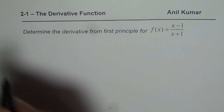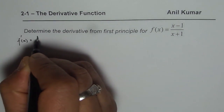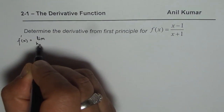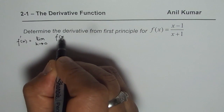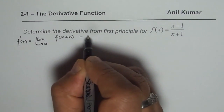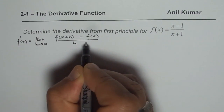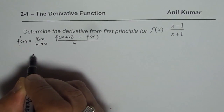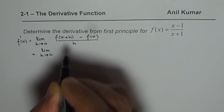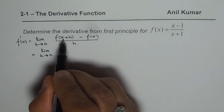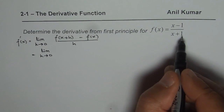The basic definition is: f dash x equals the limit as h approaches 0 of f of x plus h minus f of x, all over h. That is the basic definition, and this method we call first principle. So let us replace f of x plus h with the function itself, which is x minus 1 over x plus 1.